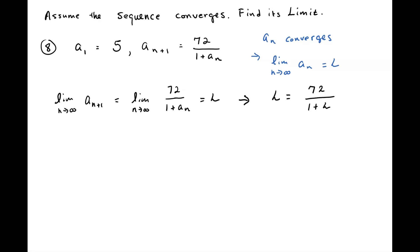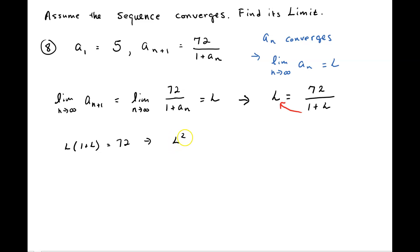All we have to do now is a very simple algebra problem, and that is to solve for L. We are going to do some cross multiplication — multiply that up. That gives us L times 1 plus L equals 72. Distributing, we get L plus L squared equals 72. Setting that equal to 0, we get the quadratic L squared plus L minus 72 equals 0.